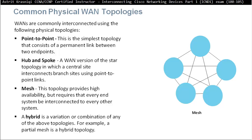Or you can have a hybrid. Hybrid is a variation or combination of any of the above topologies. For example, a partial mesh is a hybrid topology. The partial mesh is when you don't connect all the sites with each other — maybe one site is missing a connection.